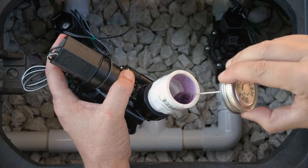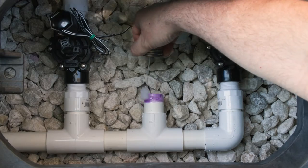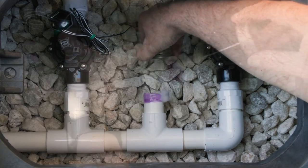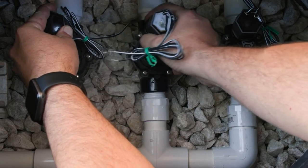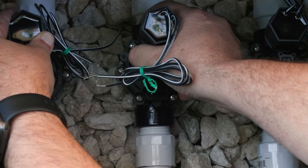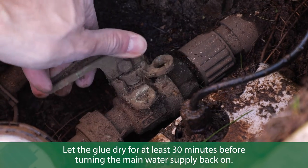Next, apply primer to the insides of the fittings and the outsides of the pipes. After the primer dries, spread an even layer of glue over the primer. Insert the pipes and make sure the valve is level. Let the glue dry for at least 30 minutes before turning the main water supply back on.